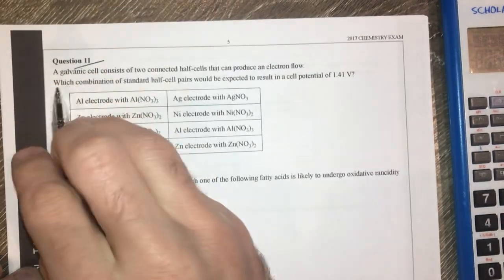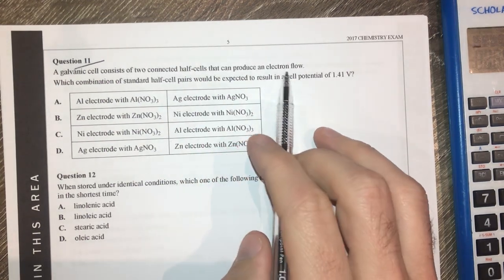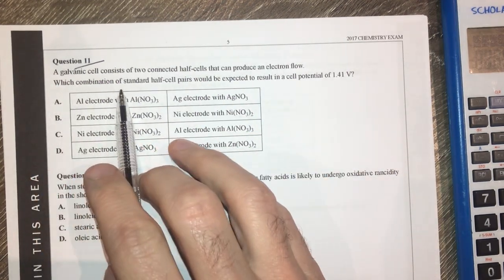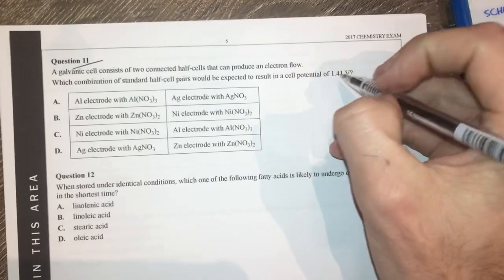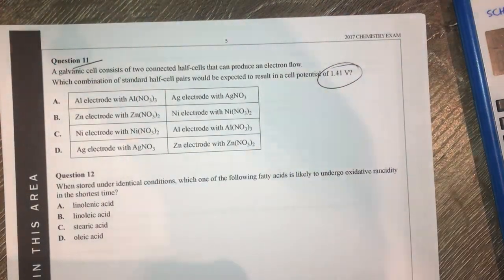Question 11. A galvanic cell consists of two half-cells and can produce electron flow. We know that. Which combination of standard half-cells would produce 1.41 volts?